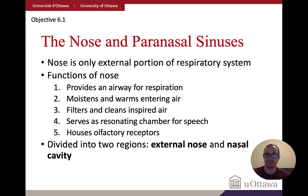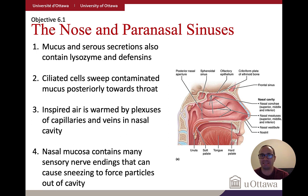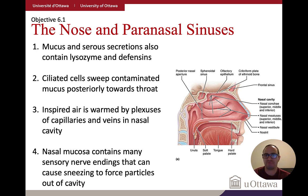The internal nose has structures that secrete mucus and serous secretions — serous meaning derived from blood. These contain defensins, which are antimicrobials, and lysozyme, an enzyme that can break down various materials. The nasal cavity contains cilia that sweep contaminated mucus down toward the throat and into the digestive system. Inspired air is also warmed by plexuses of capillaries close to the surface of the nasal cavity.